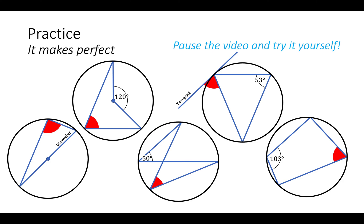Now I've got some practice questions for you. They're not too difficult — it's just about seeing if you can remember all of the rules in this video. Pause the video now and see if you can figure out what these angles are. When you're ready, I'm going to reveal the answers in 3, 2, 1. This one will be a right angle because it's inside a semicircle. This one will be 60 because the angle at the outside is half the angle at the inside. These two angles are the same because angles in the same segment are equal. This is the alternate segment theorem because these two angles are the same. And these two will add up to 180 because opposite angles in a cyclic quadrilateral add up to 180.